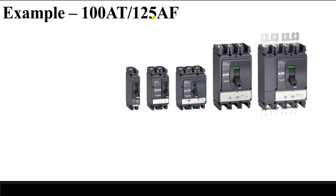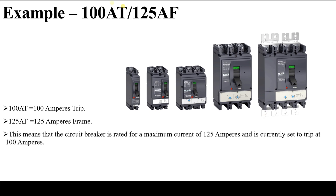For example, if we have a circuit breaker of 100AT and 125AF, it means this circuit breaker will trip at 100 amperes. We are selecting it to trip at 100 amperes, and the 125 represents the maximum current that the circuit breaker is designed to trip at. So the maximum rating for the circuit breaker is 125 amperes, and it is currently set to trip at 100 amperes — because the ampere trip is set at 100.